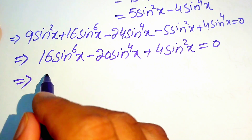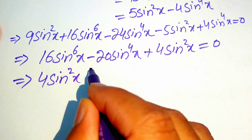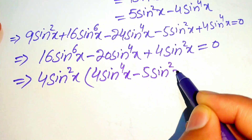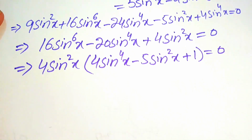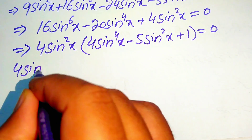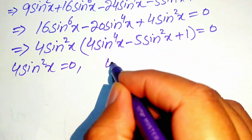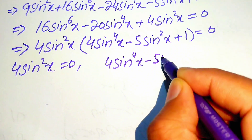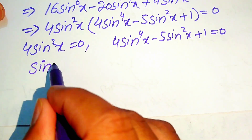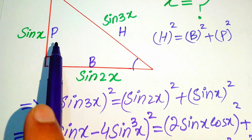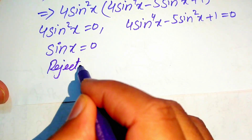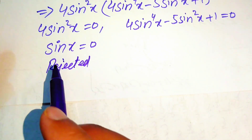We factor out 4 sin²x as the common term, giving: 4 sin²x · (4 sin⁴x − 5 sin²x + 1) = 0. This divides into two cases. The first case, 4 sin²x = 0, gives sin x = 0. However, sin x is the perpendicular side of the triangle and cannot be zero, so we reject this case.